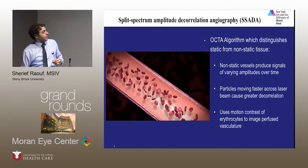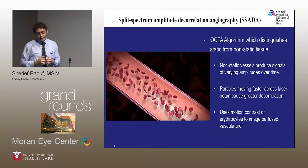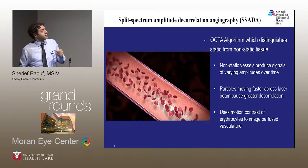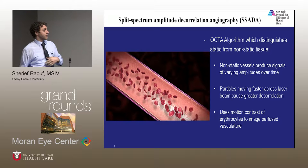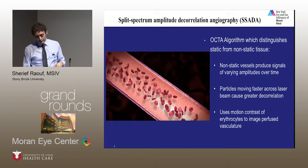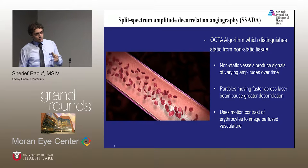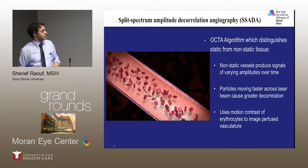The technology that distinguishes OCTA from OCT is called split spectrum amplitude decorrelation, or SSADA. It allows the machinery to distinguish between static and non-static tissue, because non-static vessels produce signals of larger or more varying amplitudes over time. Particles moving faster across the light beam will cause higher decorrelation, allowing perfused vessels to be distinguished from more static tissue.